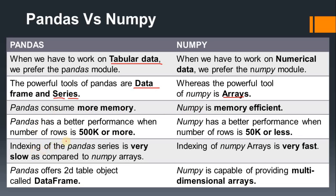The next difference is that pandas has better performance when the number of rows is 500k or more — meaning when we have large data, pandas is suggested. Numpy has better performance when the number of rows is 50k or less, meaning for middle or smaller range data, numpy is preferred. If the data is huge, we use pandas.